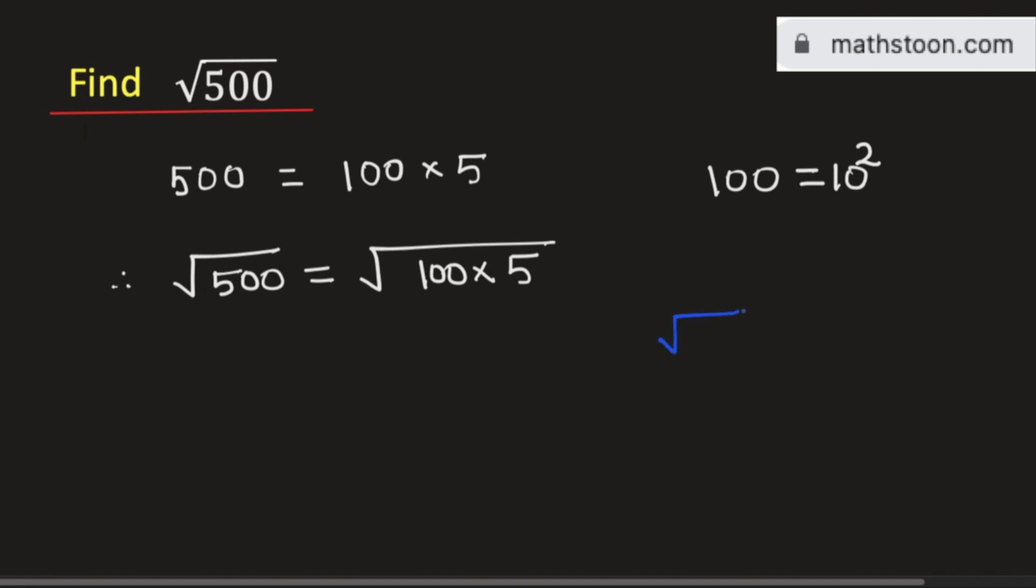Now using the rule of square root of a times b is equal to square root of a times square root of b, this will be equal to square root of 100 times square root of 5.